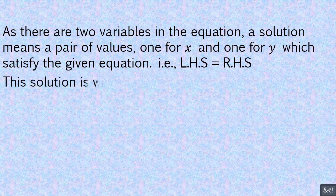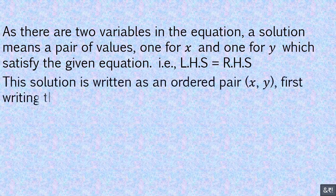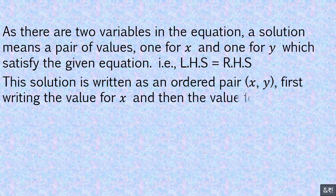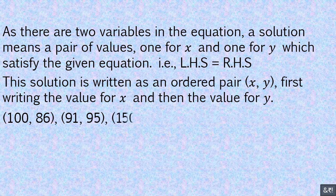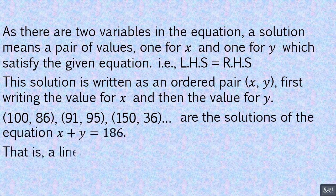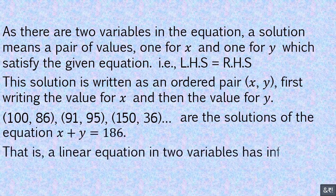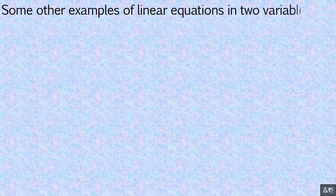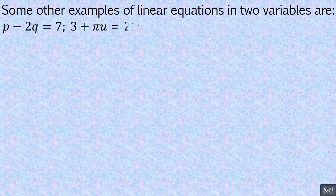Let us use x to denote the score in mathematics and y to denote the score in science. We get x plus y equals 186, which is an example of a linear equation in two variables. As there are two variables in the equation, a solution means a pair of values — one for x and one for y — which satisfy the given equation. This solution is written as an ordered pair (x, y), first writing the value for x and then the value for y. For example, (100, 86), (91, 95), (150, 36), etc., are solutions of x plus y equals 186. That is, a linear equation in two variables has infinitely many solutions. Some other examples of linear equations in two variables are: p minus 2q equals 7, 3 plus πu equals 21v, root 2s plus 5t equals 2, and m minus 1.8n equals 12.